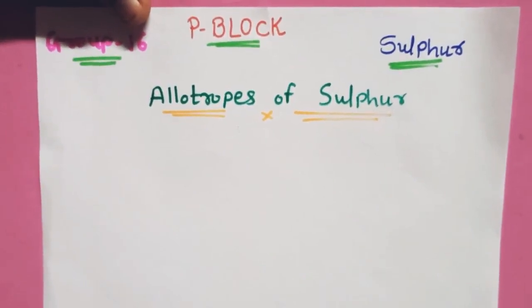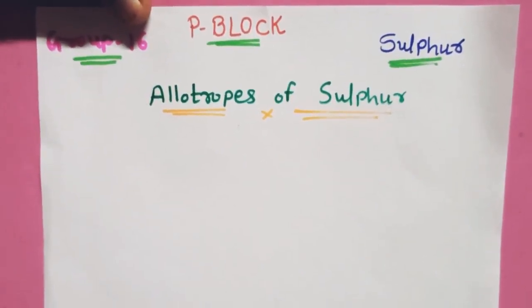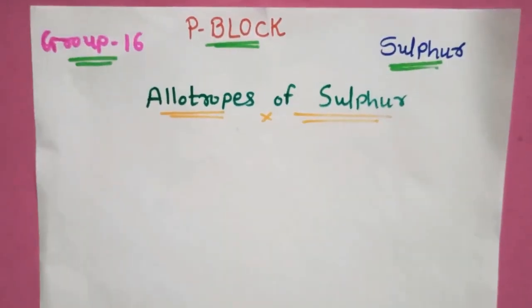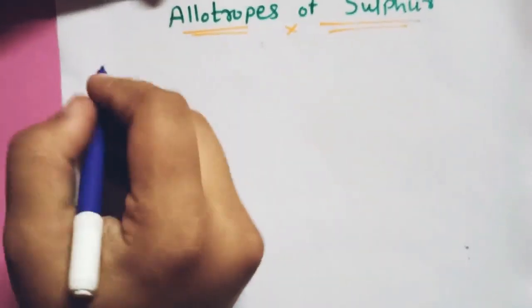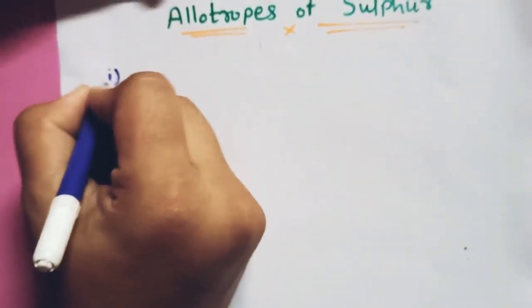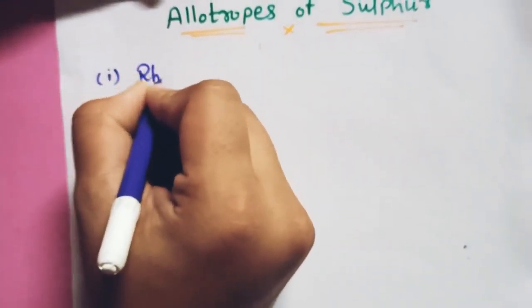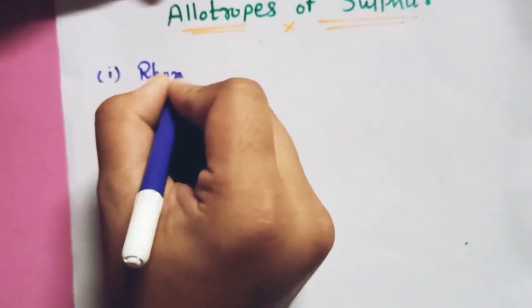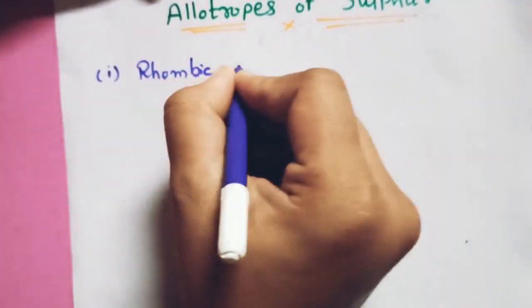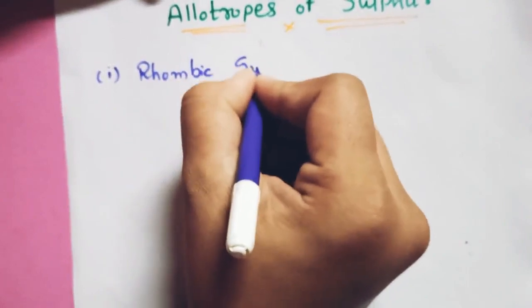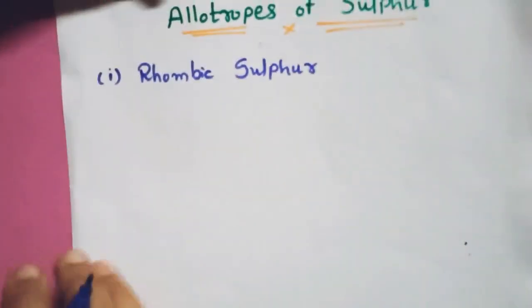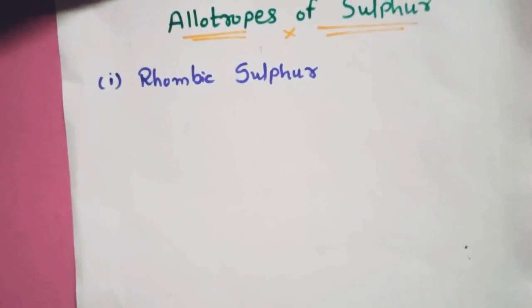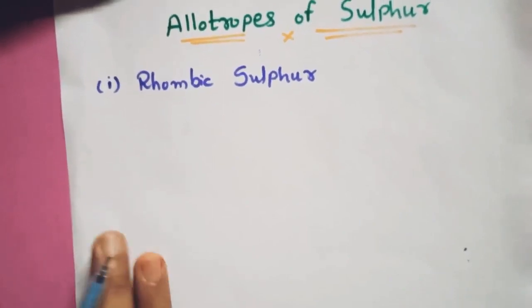The first allotrope of sulfur is rhombic sulfur. Let us study the properties of rhombic sulfur one by one.